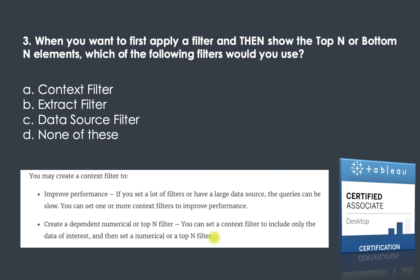Whenever there is a requirement of showing the top N or bottom N elements and you have other filters too, you have to make those other filters a context filter. I've made a video on filters named 'Order of Operations in Tableau' — do watch that; I'll leave the link in the description. So the answer here is context filter.